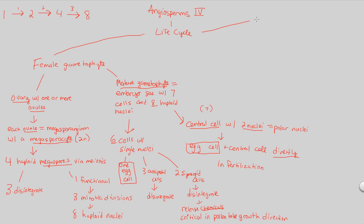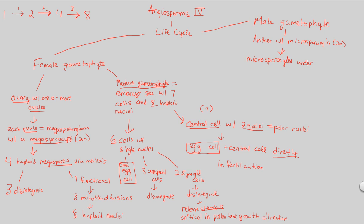Now for the male gametophyte, which is simpler. The male gametophyte is located within the anther region. The anther is the larger structure housing the microsporangia, which are in a diploid state (2N). Microsporocytes develop within the microsporangia and undergo meiosis — just as the megasporocytes did on the female side. The result of microsporocytes undergoing meiosis is the formation of microspores.